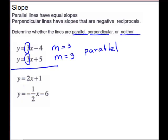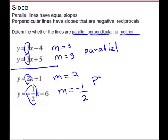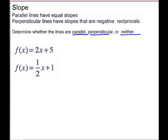The next set of examples: we have two lines, both in slope-intercept form. The first one has a slope of 2, and the second one has a slope of negative 1 half. These are not parallel, but 2 and negative 1 half are negative reciprocals — opposite sign and flipped over. 2 is 2 over 1, flip it over, so these are perpendicular lines. For our third example, these are written as functions, but f(x) is the same as y, so we can write it as y in slope-intercept form. The slope of the first is 2 and the second is 1 half — notice it does not have a negative sign. These are not negative reciprocals; it's flipped over but doesn't have the opposite sign. These are going to be neither.